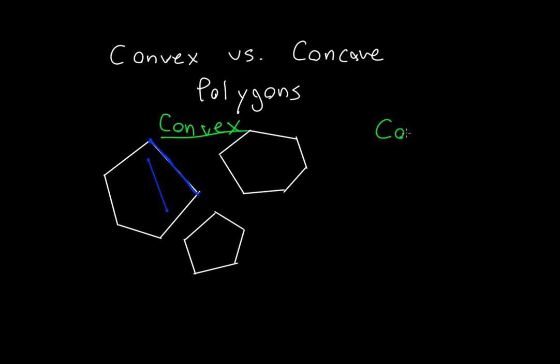Concave polygons, on the other hand, are the opposite. The opposite case is true for these. So, for concave polygons, I'm just going to make one here for you. If you choose any two points, in one case, if not more, you will have a line that exits the polygon.